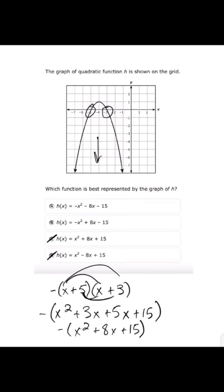But I still have this negative sign outside my parentheses. I'm going to distribute that to each term. So my final answer is -x² - 8x - 15.